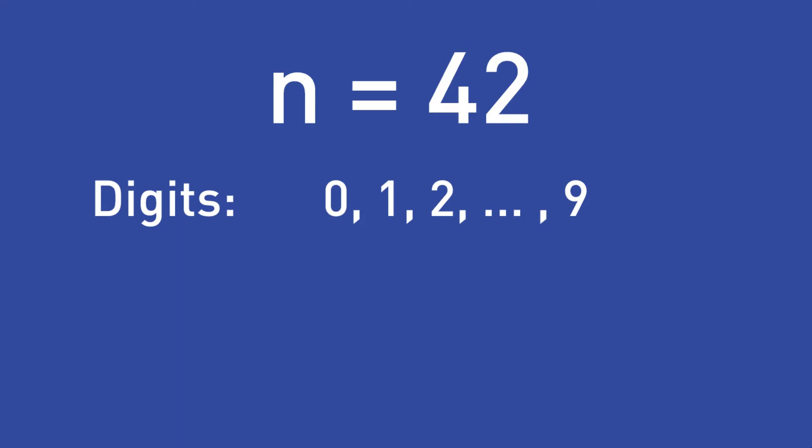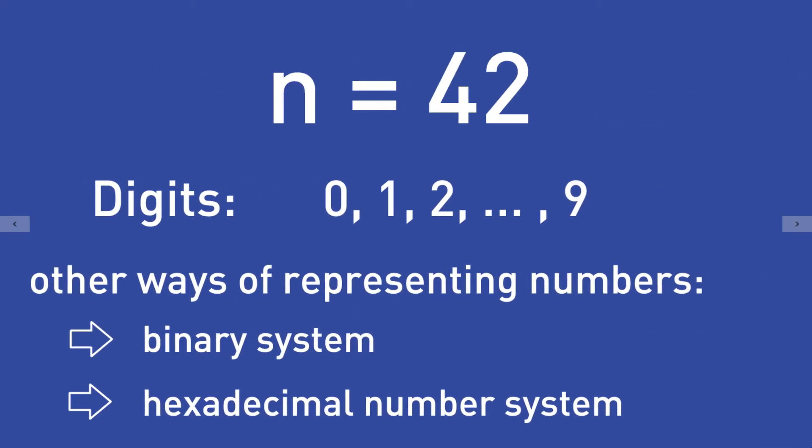Since our childhood we have been used to the decadal system of numbers. We are also used to the symbols of the ten digits of the Arabic numerals — the symbols for the digits 0 to 9. But there exist other ways of representing numbers apart from the decadal numeral system. For example, when considering computers it makes sense to represent numbers using the binary system. The hexadecimal number system is pretty popular too.